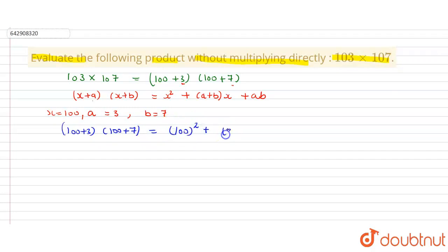Plus a plus b, which is 3 plus 7, times x which is 100, plus ab which is 3 times 7.